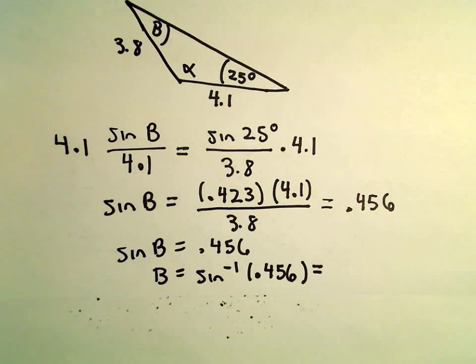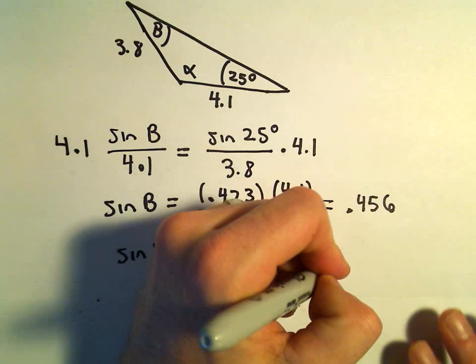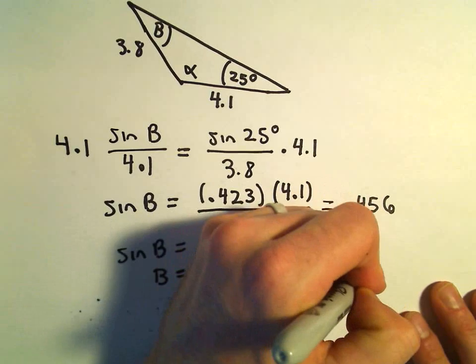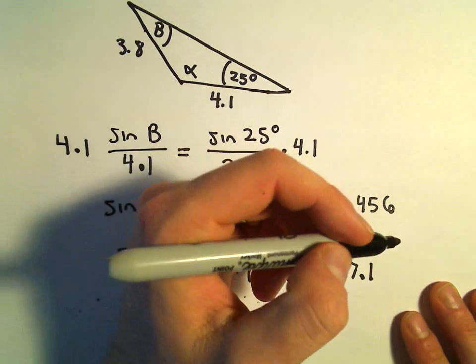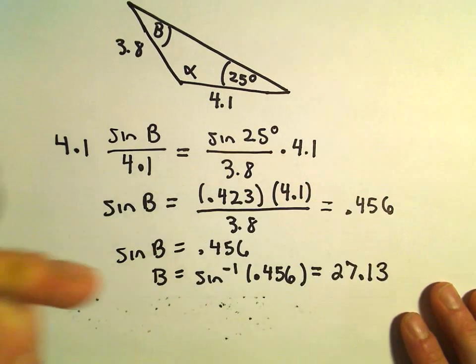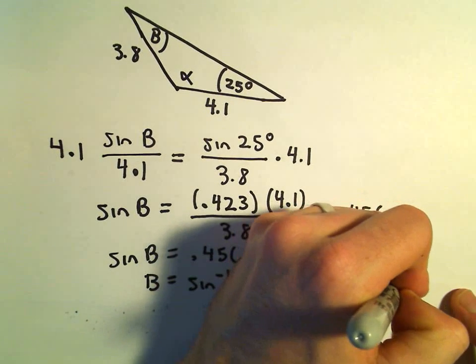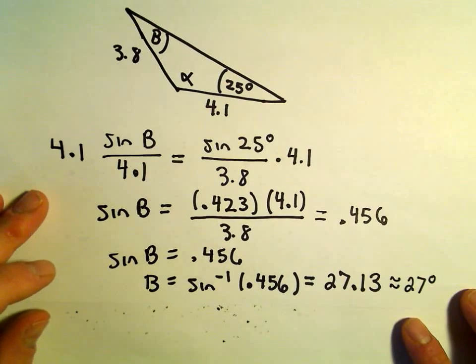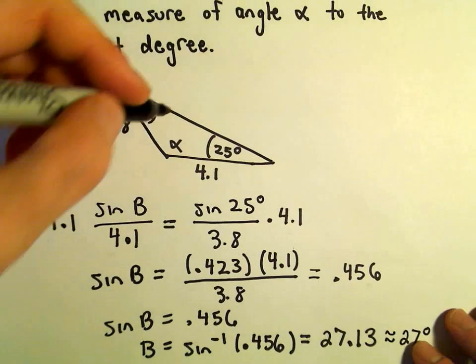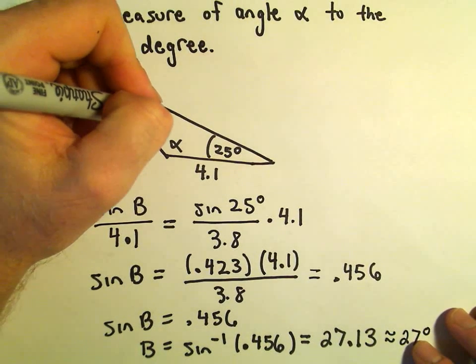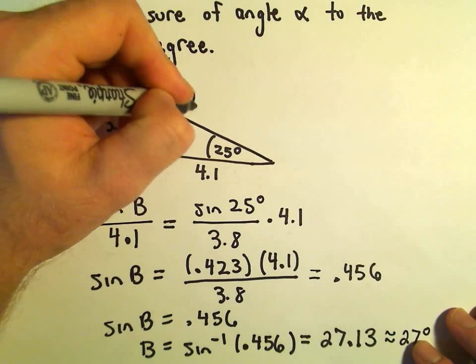So, let's see what that gives us here. I'm getting this to be roughly 27.13 degrees after rounding. Since we're doing things to the nearest degree, I think I'm just going to round that off to 27 degrees. So, our angle b here is going to be roughly equal to 27 degrees.